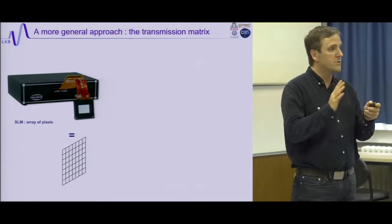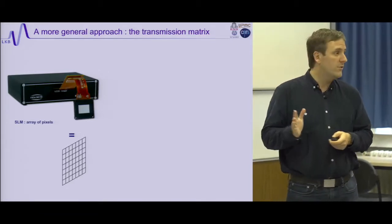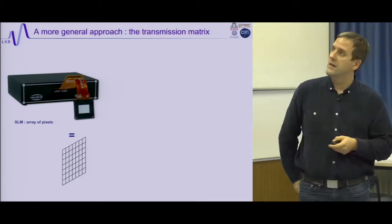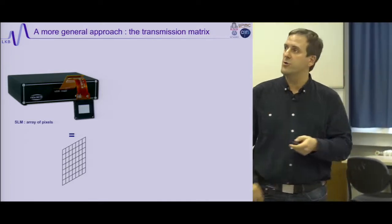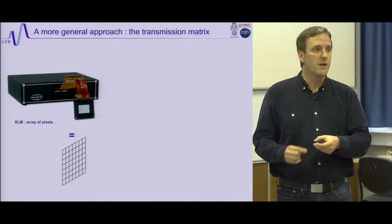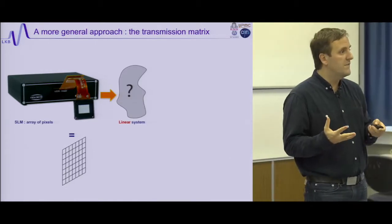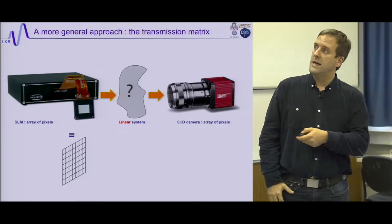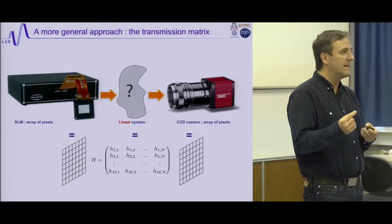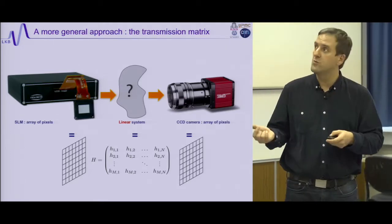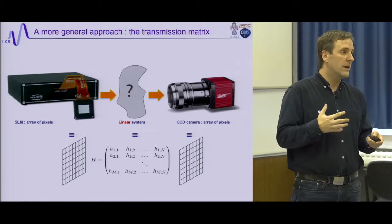The third approach — perhaps the most general — is the transmission matrix, which we introduced. We have a spatial light modulator controlling input modes, a complex scattering system, and a camera for output. In between we have a linear system, so there is a matrix H linking input modes to output modes — the transmission matrix. The basic idea is to shine light through the system displaying sequentially a complete basis of all possible input modes, and for each input mode record the output speckle.